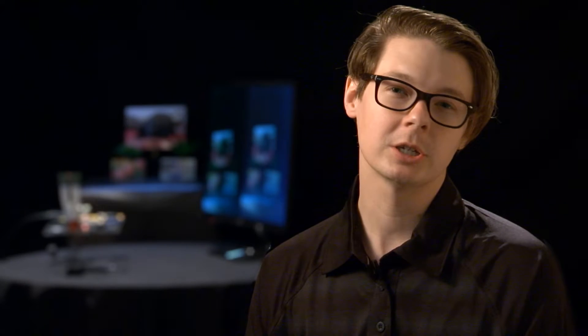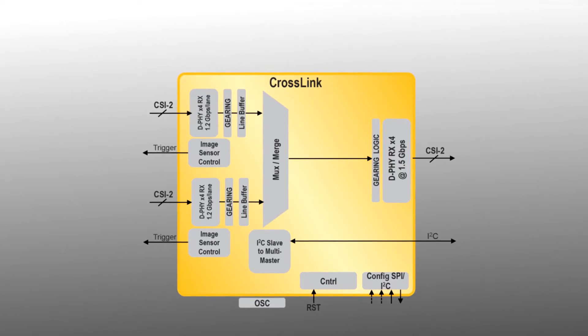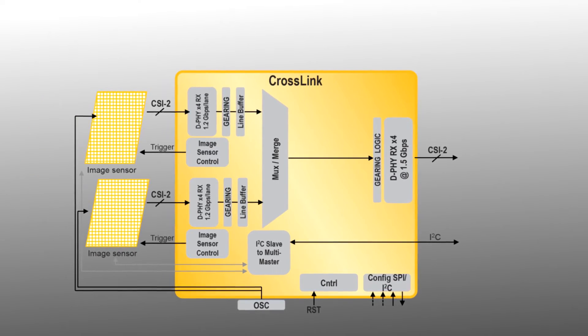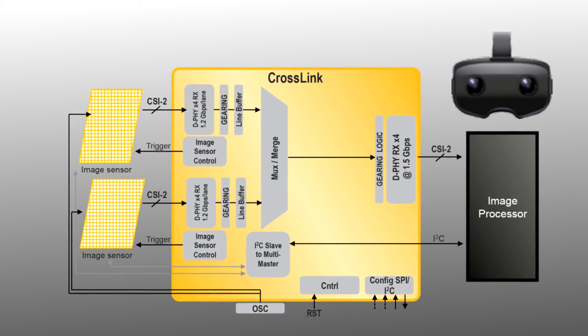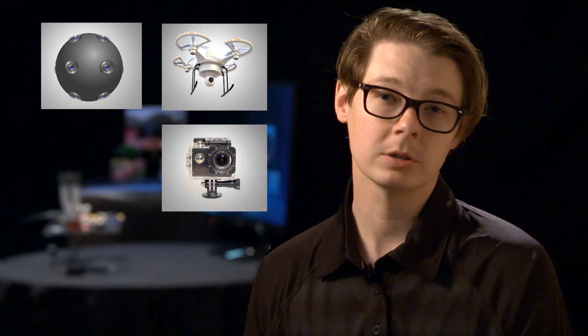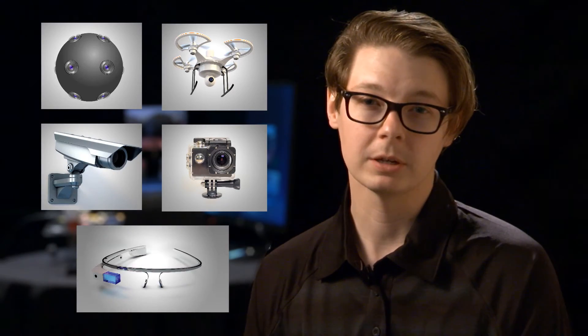A common application example is muxing or merging multiple MIPI-CSI2 image sensors and combining them to one MIPI-CSI2 output. This is commonly used for drones, 360 cameras, action cameras, surveillance, and augmented reality applications.